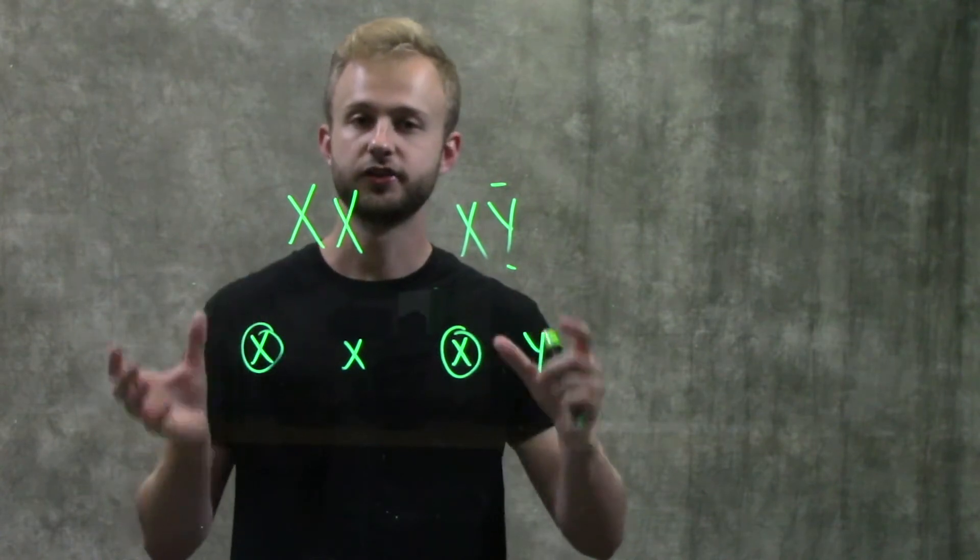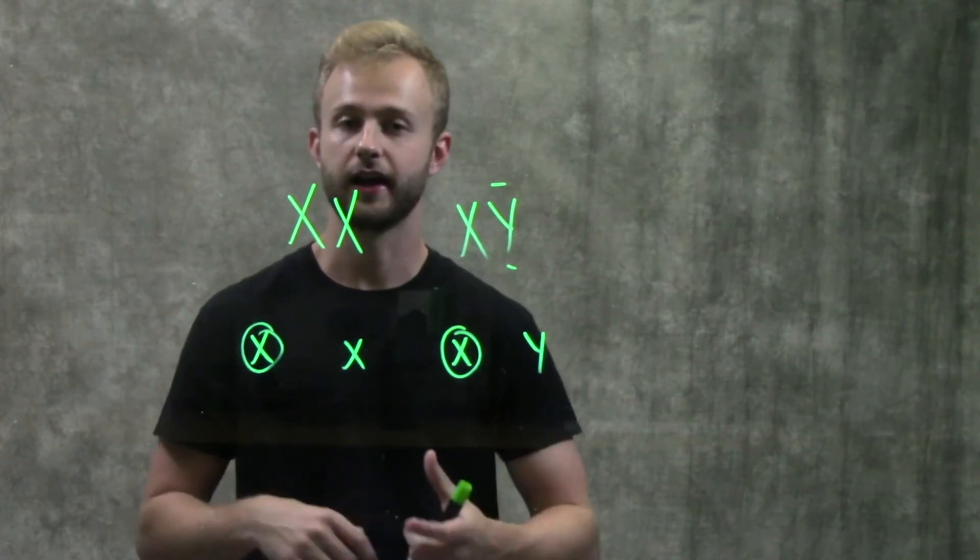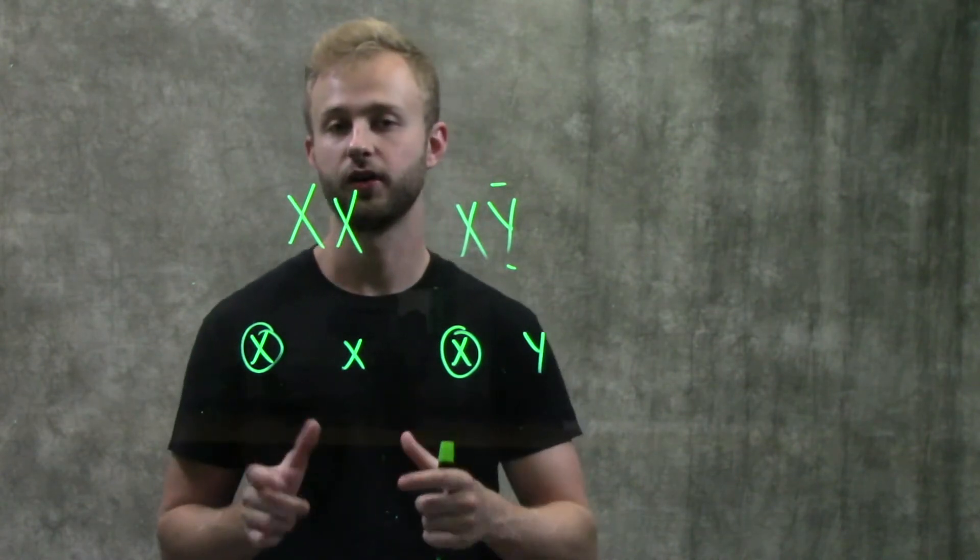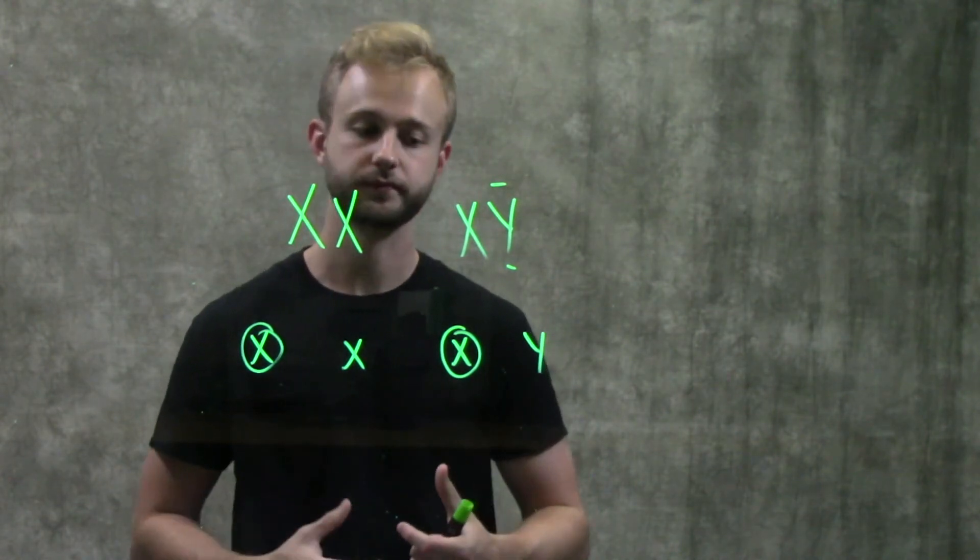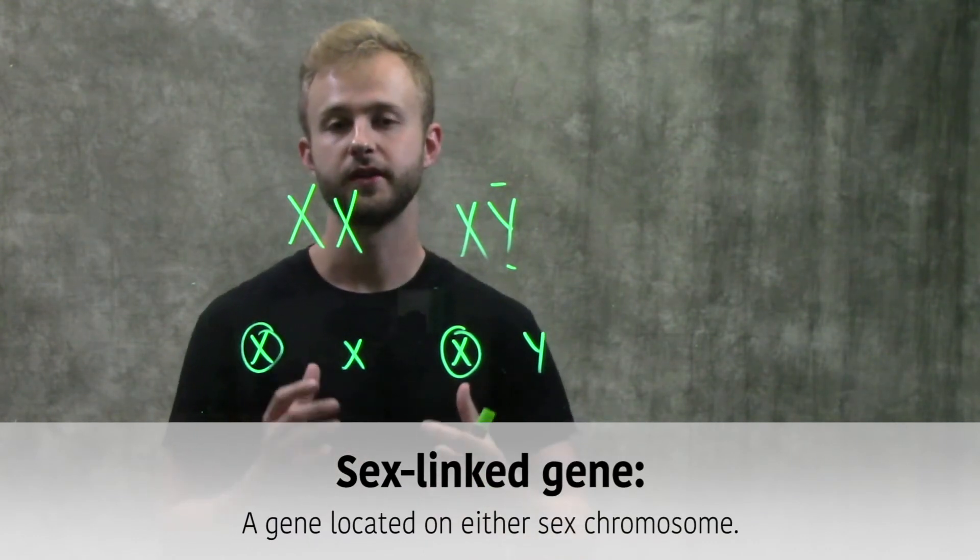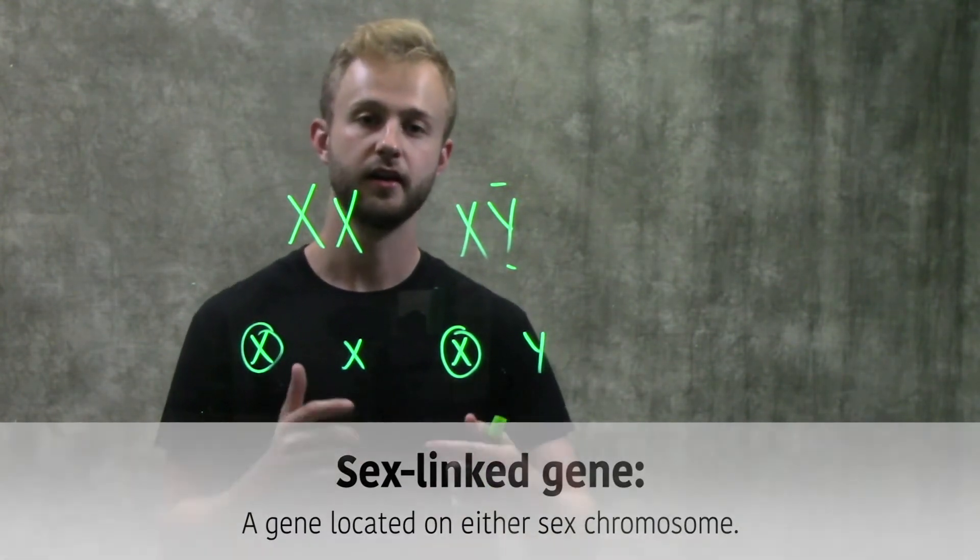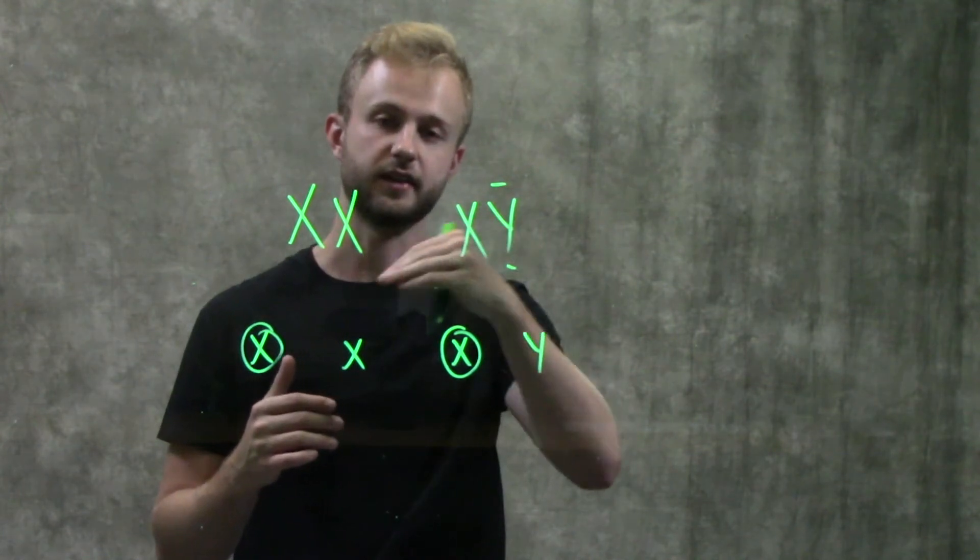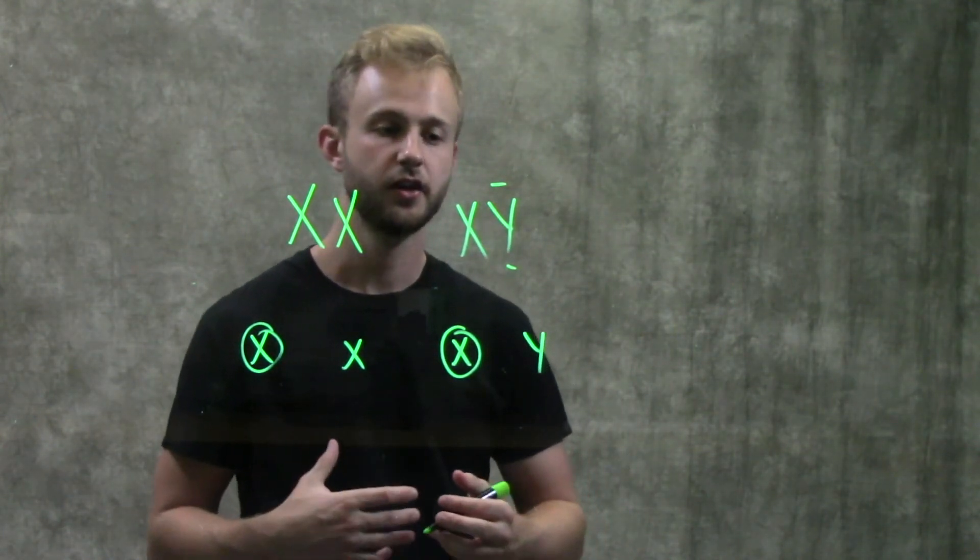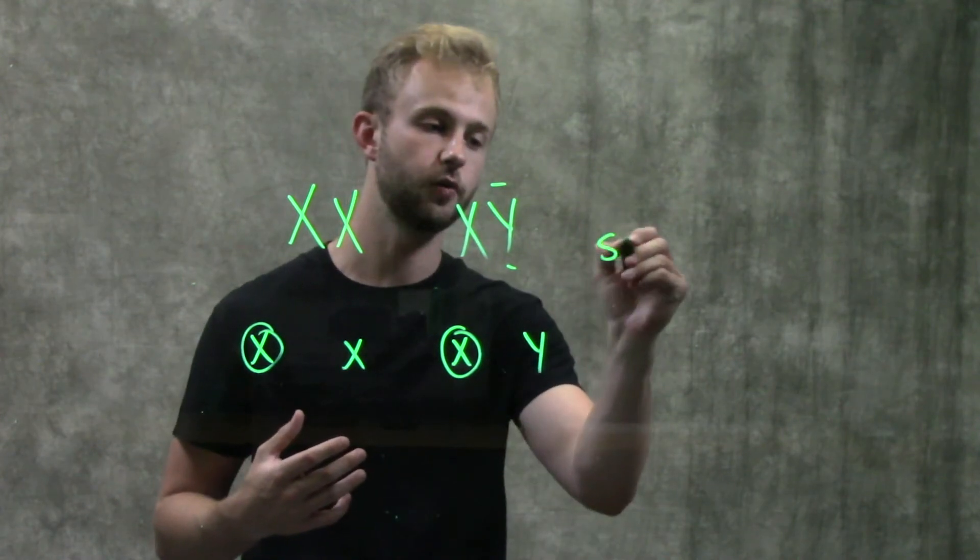Now that we understand what the sex chromosomes are and how they work a little bit, we can look at an example of a sex-linked gene. Sex-linked genes are genes that are inherited on these sex chromosomes. A really good example of this is something called the SRY gene.